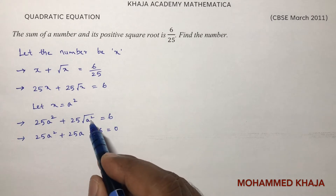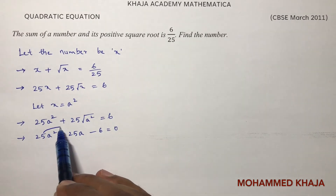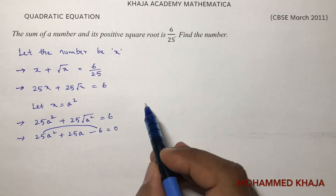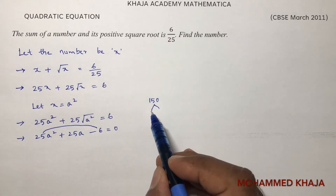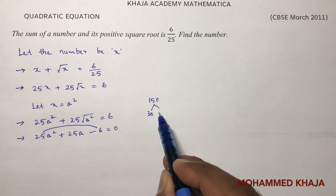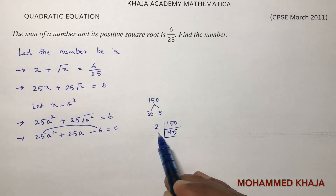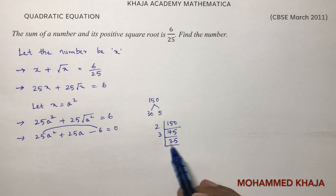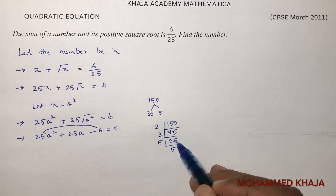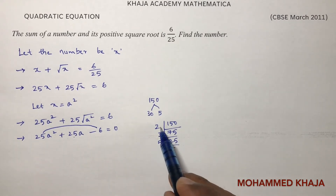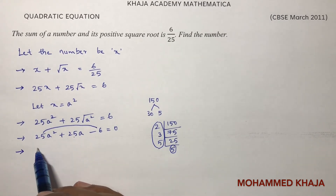So the equation becomes 25a squared plus 25a minus 6 equals 0. Now factorize: 25 times 6 is 150. Find factors of 150 — using prime factorization: 2, 75; 3, 25; 5, 5. So 2 times 3 is 6, and 6 into 25 gives 150. The factors are 30 and 5.